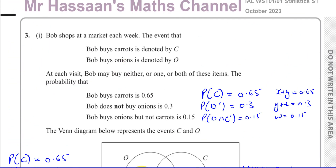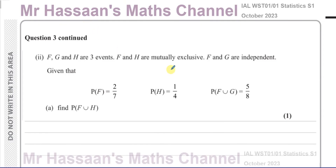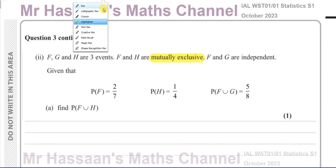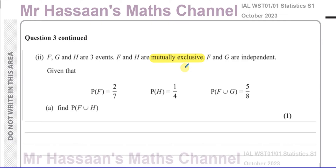Mutually exclusive means one cannot happen at the same time as the other. For example, if cards are numbered 1 to 10 and you want to pick a number that is both even and odd — you can't, because even and odd are mutually exclusive. You can't be both. However, odd and prime are not mutually exclusive — you can pick a card that is both, like the number three. So mutually exclusive means one event cannot happen at the same time as the other.